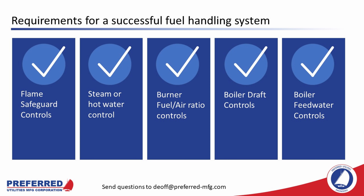Boiler controls can be broken down into several major categories: flame safeguard controls, steam pressure or hot water temperature controls, fuel-air ratio controls, boiler draft controls, and feed water controls.